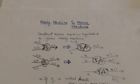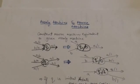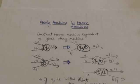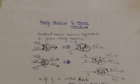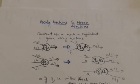Hello friends, welcome back to the tutorial. In this tutorial we will study how we can convert a Mealy machine to a Moore machine — that is, we will learn to construct a Moore machine equivalent to a given Mealy machine. In a Mealy machine, outputs are associated with transitions, and in a Moore machine, outputs are associated with states.